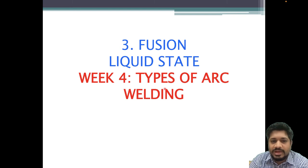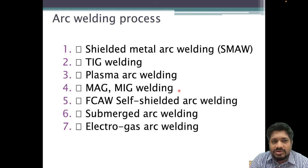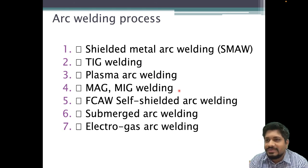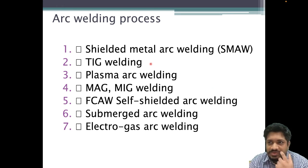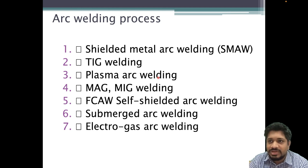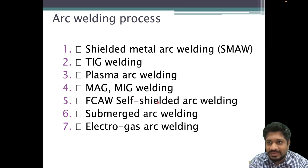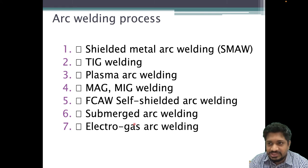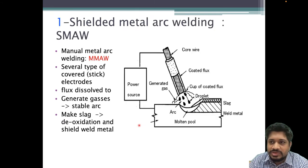Now we move on to types of arc welding, including fusion liquid-state welding. There are seven major classifications: (1) shielded metal arc welding, (2) TIG or gas tungsten arc welding, (3) plasma arc welding (PAW), (4) MAG/MIG or gas metal arc welding (GMAW), (5) flux core arc welding, also called self-shielded arc welding, (6) submerged arc welding (SAW), and (7) electrogas welding (EGW). Let's start with shielded metal arc welding (SMAW).